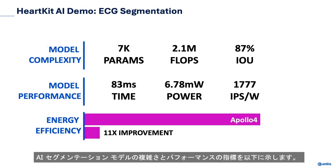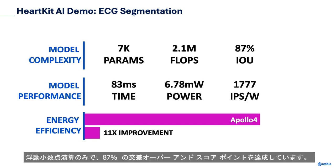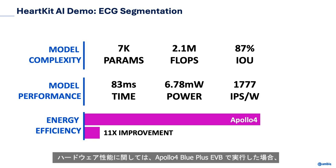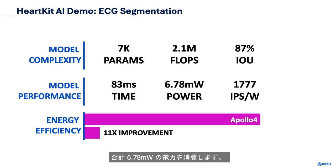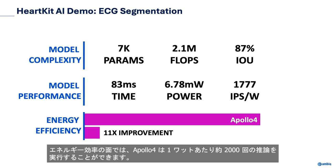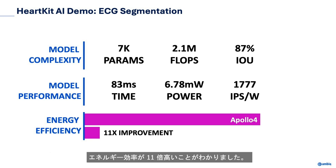The following provides high-level complexity and performance metrics of the AI segmentation model. In terms of complexity, the model only requires 7,000 parameters and 2.1 megaflops while achieving an intersection over union score of 87%. A single inference over a 2.5-second ECG input window takes 83 milliseconds to run and draws 6.78 milliwatts total power when running on an Apollo 4 Blue Plus EVB. In terms of energy efficiency, the Apollo 4 is able to perform almost 2,000 inferences per second per watt, and we find it to have 11 times better energy efficiency compared to other Cortex M4 solutions.